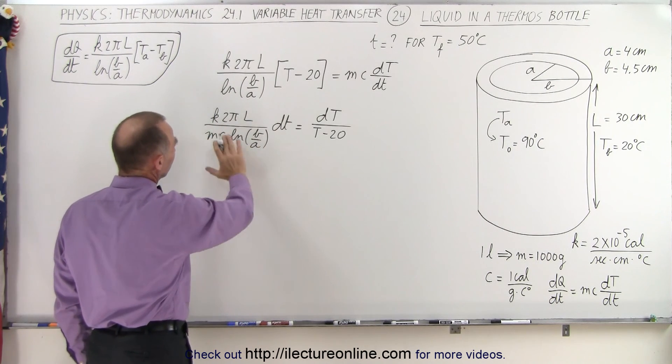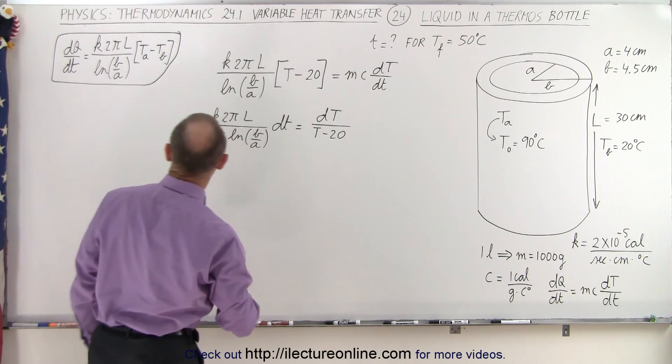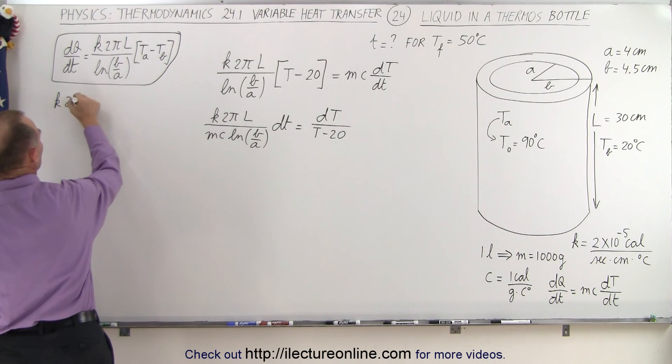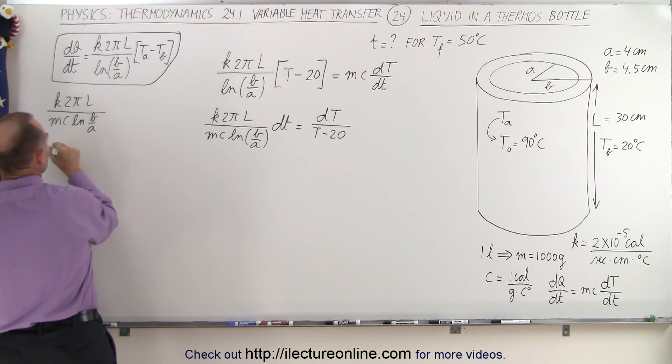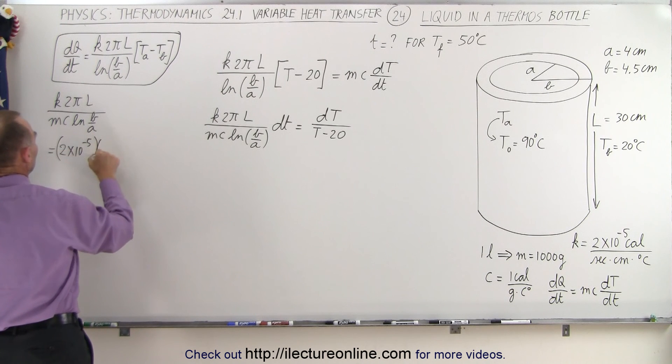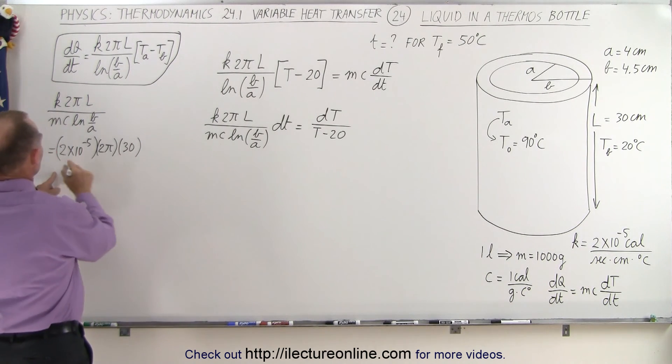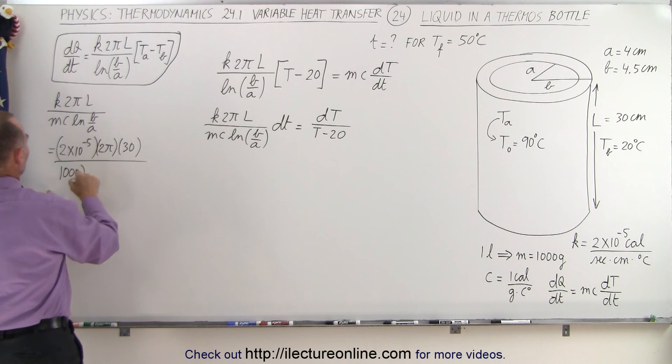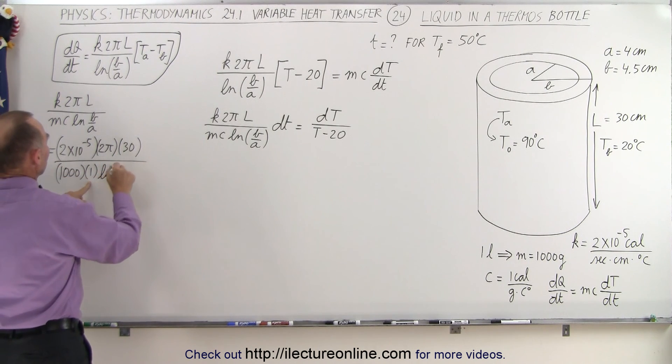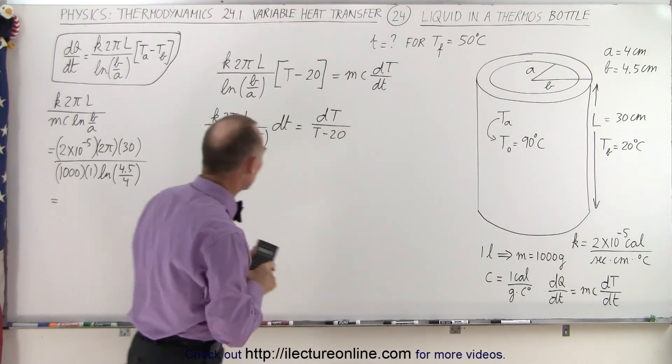But let's just put that into a single number because these are all constants. So we can actually simplify that by finding a single number for that. Let's do that on the side right here. So K times 2πL divided by MC times the natural log of B over A can be written as K, 2 times 10 to the minus 5, times 2π times the length of 30. And since everything is in centimeters and calories, we can keep the 30. Denominator, that's 1000 grams. C for liquid like water is 1 times the natural log of 4.5 over 4. And so all this is going to turn into a single numerical constant that will make it easier to work out the equation. So let's go ahead and do that.